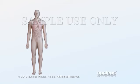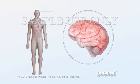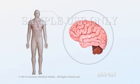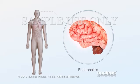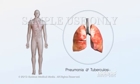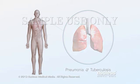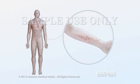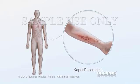Some of the common AIDS-related opportunistic infections are: inflammation of the tissues covering your brain and spinal cord, called meningitis; inflammation of your brain, called encephalitis; respiratory illnesses such as pneumonia and tuberculosis; intestinal illnesses such as chronic diarrhea caused by infectious parasites; and cancers such as Kaposi's sarcoma and non-Hodgkin lymphoma.